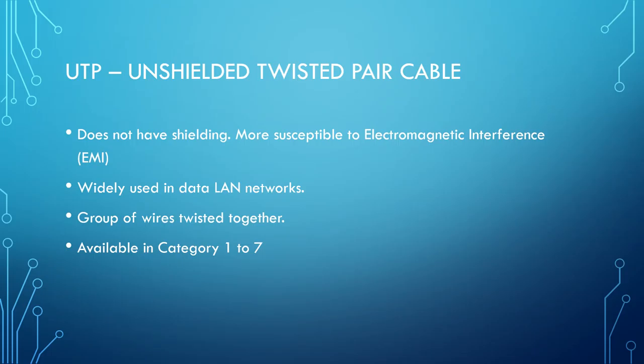Unshielded twisted pair cable does not have shielding, making it more susceptible to electromagnetic interference. This form of cabling is widely used in LAN applications mainly because of its lower cost. UTP cables, like STP cables, are available in different categories, where each category represents the tightness in which the pairs are wrapped, allowing for higher transmission distances.